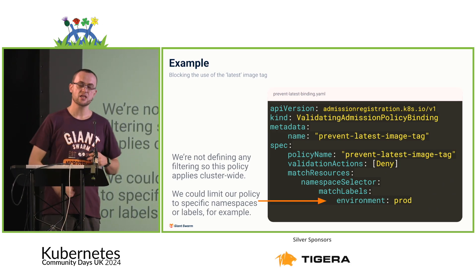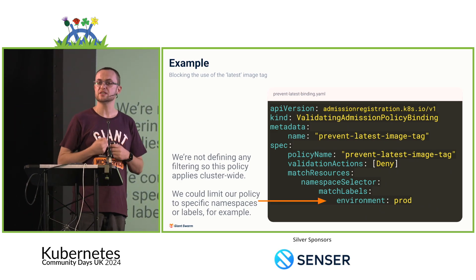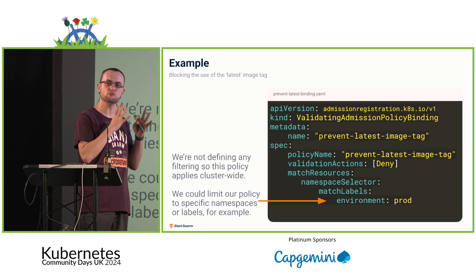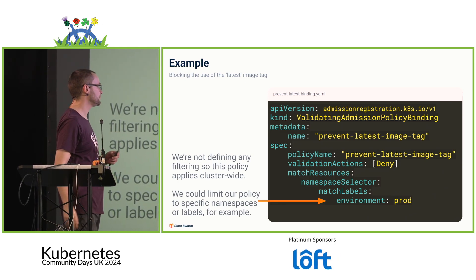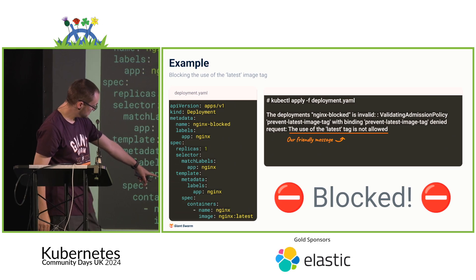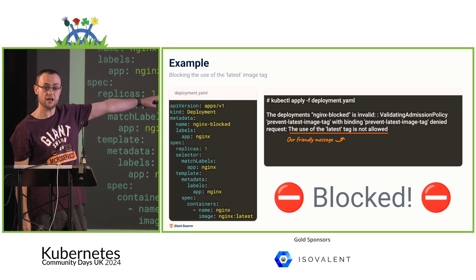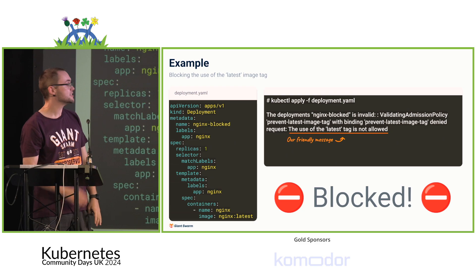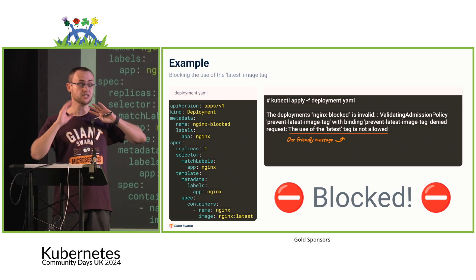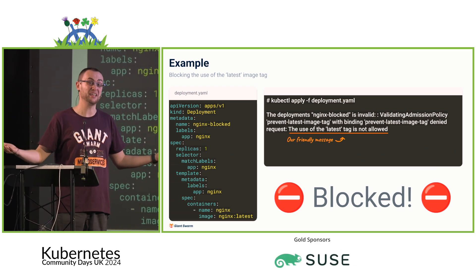For example, say we had a namespace labeled environment=prod and only wanted to prevent the latest tag in that namespace — this is how we target it. When I apply an Nginx deployment with the latest image tag, I get the nice human-friendly error messages I wrote earlier rather than a big block of CEL. This has prevented me from using the latest tag in deployments, all done within the API server. As long as you can make an API call, this works — and if you can't make an API call, you can't apply things anyway. You no longer have the case where your webhook pod goes down or you have networking issues.